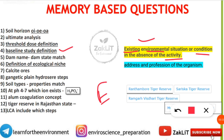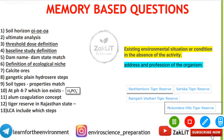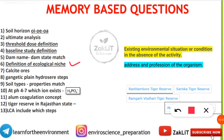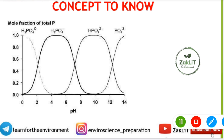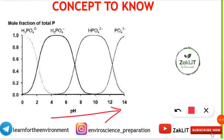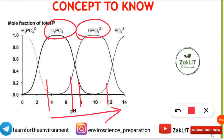There was a question on matching dam names with their states. Again, a question on the definition of ecological niche — a 'chocolate' question — where the answer is the address and profession of the organism. Questions also came from calcite ores, succession steps in the Gangetic plain, and matching soil types with their properties. At pH 4 to 7, the correct ion present is H₂PO₄⁻. In the graph shown, you can see the ions present at each pH level: H₂PO₄⁻ at pH 4–7, HPO₄²⁻ at pH 8–12, and PO₄³⁻ beyond pH 12.